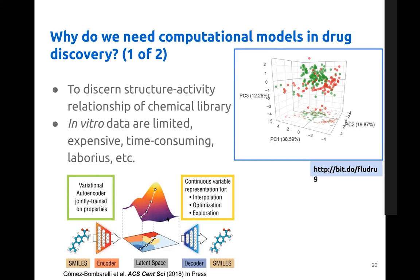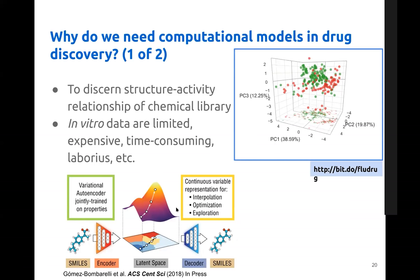Here is an example of an encoder-decoder system to synthesize a new molecule using a computer. You train the computer to understand the chemical structure by encoding the information, the computer learns, and then it creates a new molecule by decoding it. This was published in 2018.